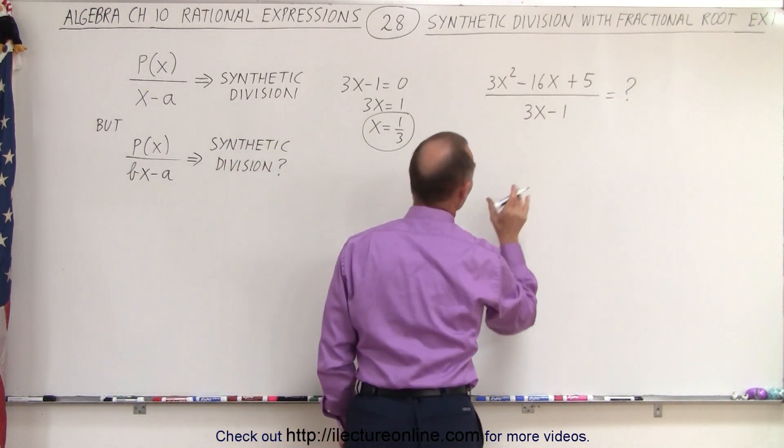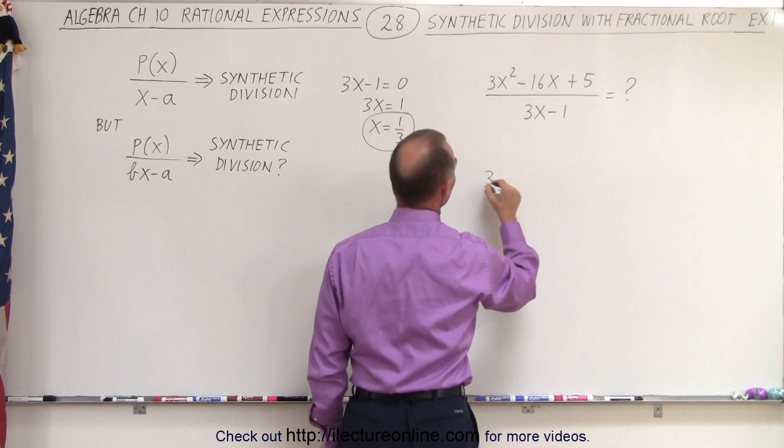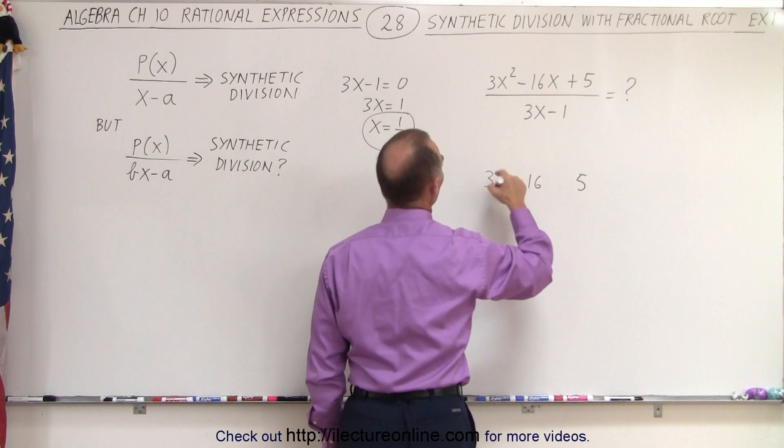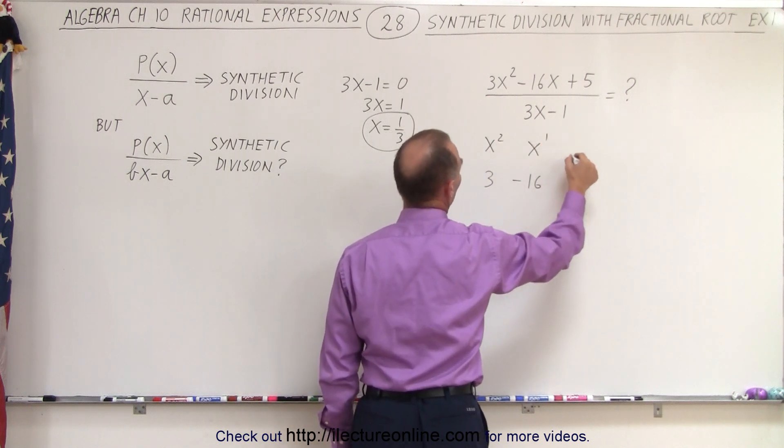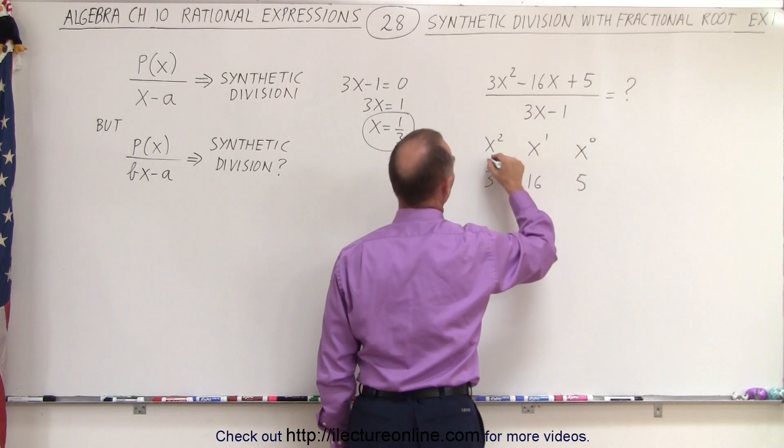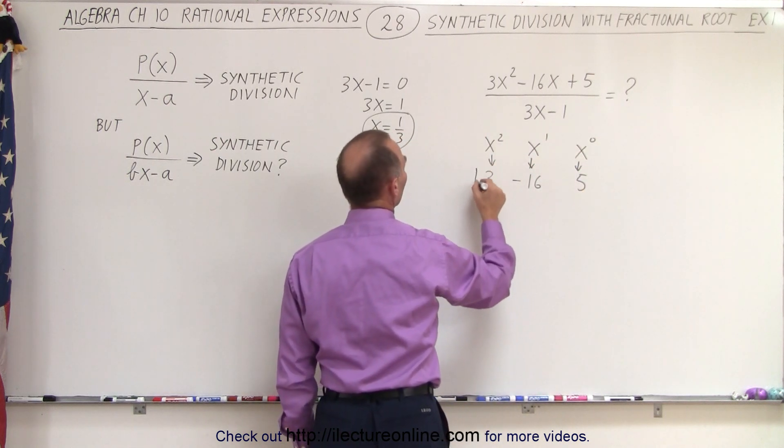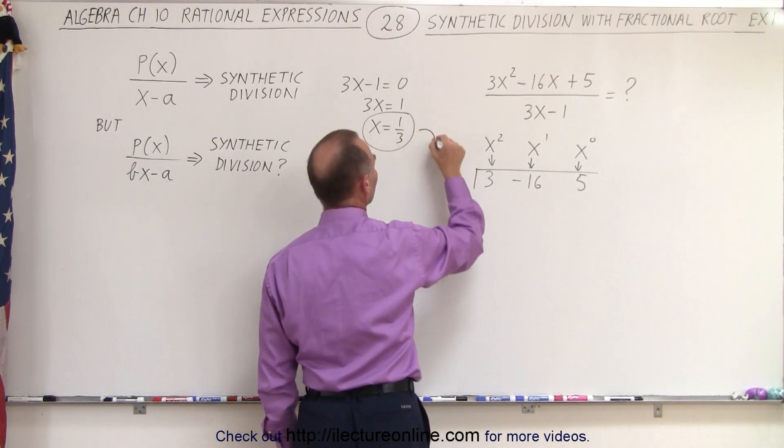So then we plop down the numbers. We write down the numerical coefficients of the numerator. So here, 3 minus 16 plus 5. Notice that this is the x squared term. This is the x to the first term. This is x to the 0 term. Like so. And then we go ahead and we plop down the root, which is 1 third, which comes from here.